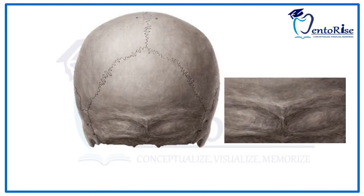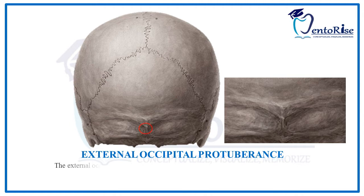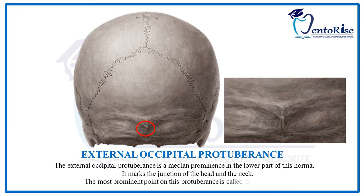The next feature in Norma Occipitalis is the presence of the external occipital protuberance. From the name itself we can determine that this feature is present in the occipital bone — more specifically in the lower part of the occipital bone, or the lower part of Norma Occipitalis. It marks the junction of the head and the neck. The most prominent point on this protuberance is called the inion.